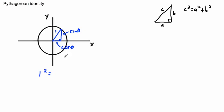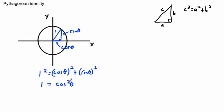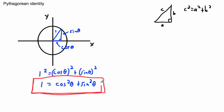So we can write: one squared equals cos theta squared plus sine theta squared. One squared is just one. Now watch the notation carefully — we write cos squared theta, putting the squared first, so you don't think theta is squared. Cos squared theta means take cos theta and then square that answer. This is the Pythagorean identity: cos squared theta plus sine squared theta equals one.